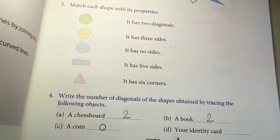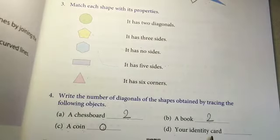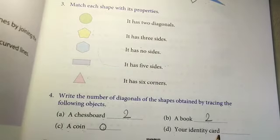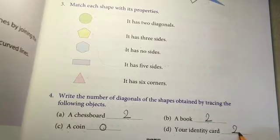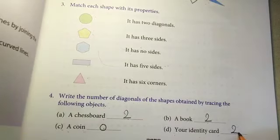And D one is your identity card. Our identity card has rectangle shape. And rectangle shapes opposite sides will join. Again we will get two diagonals.